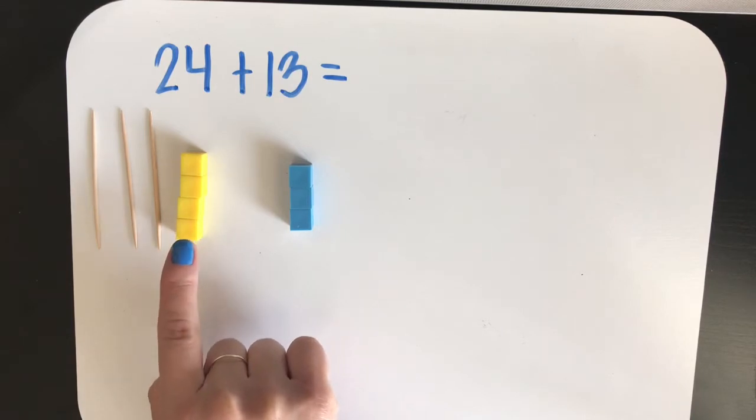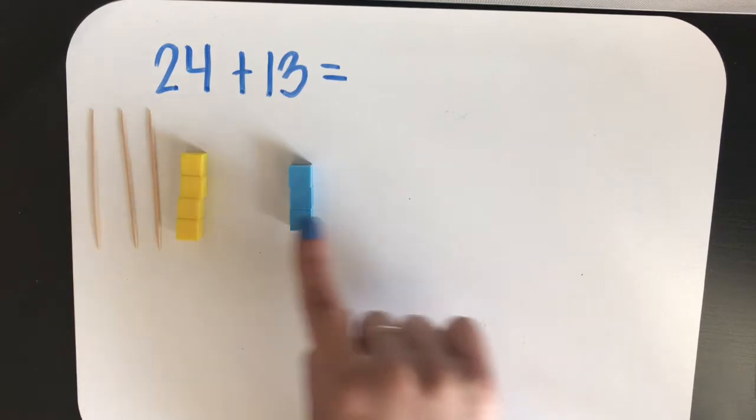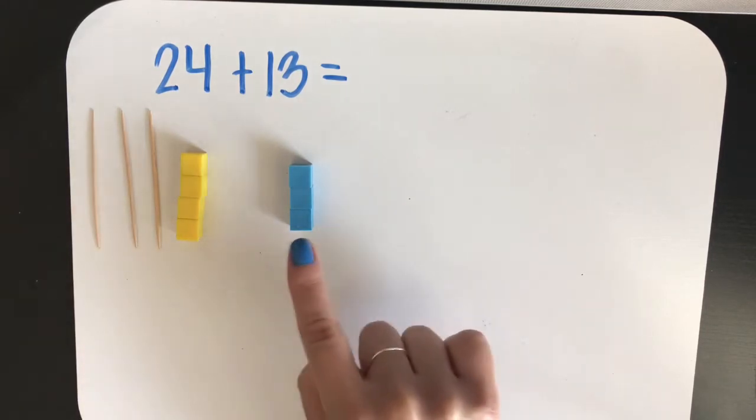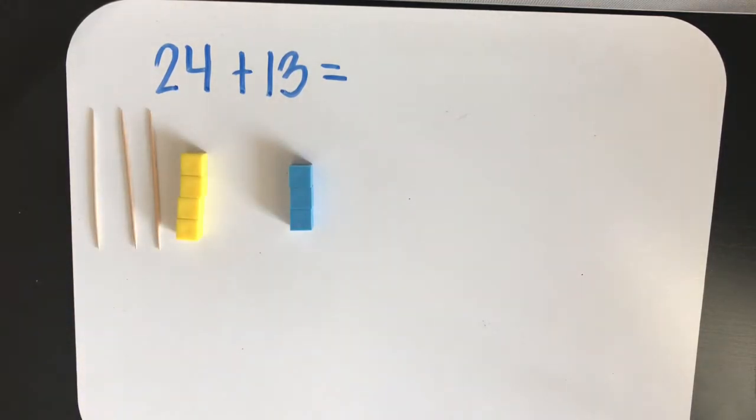What do we need to do next? Yes, then we add the three that are left. Now, we have 34 plus 3 equals 37.